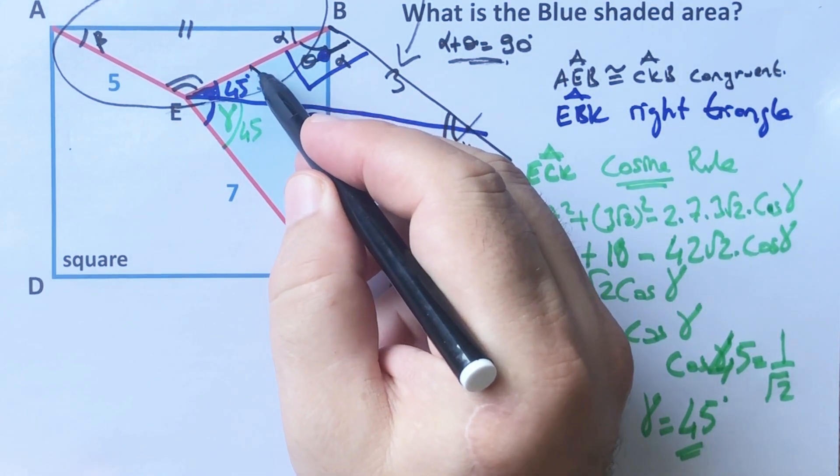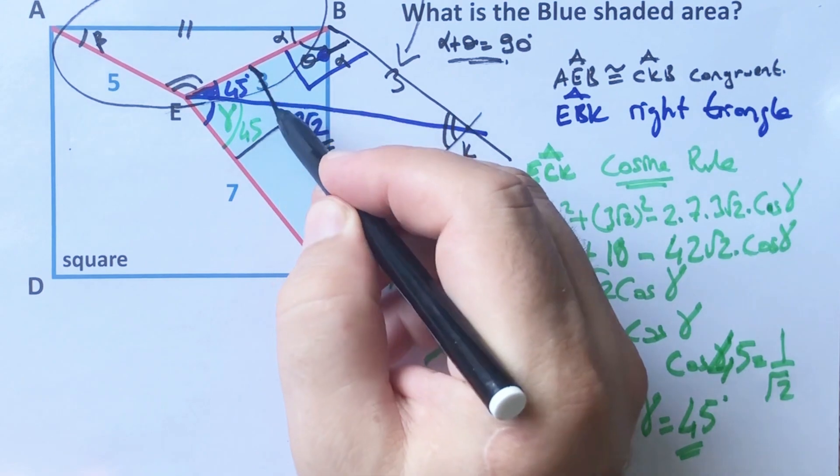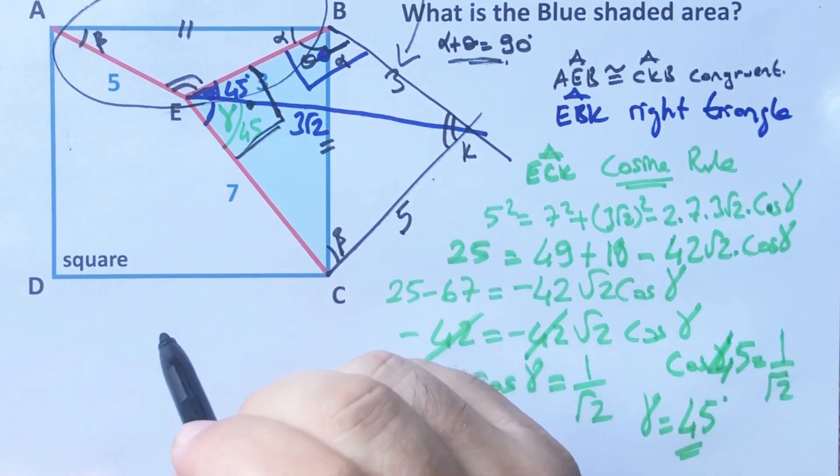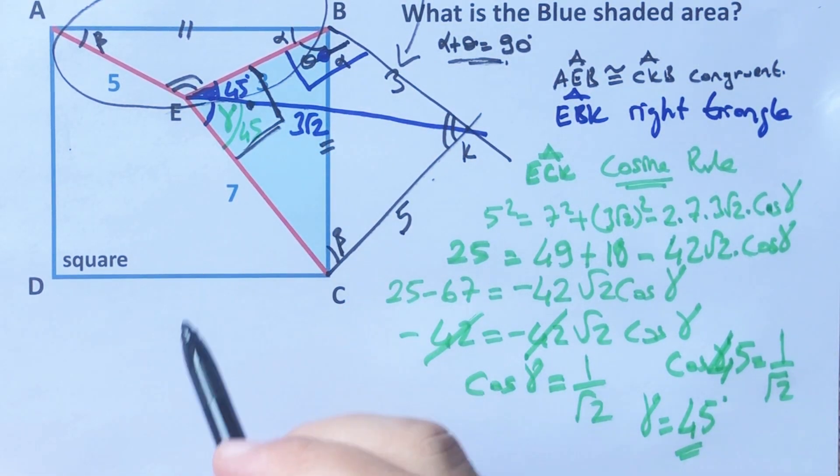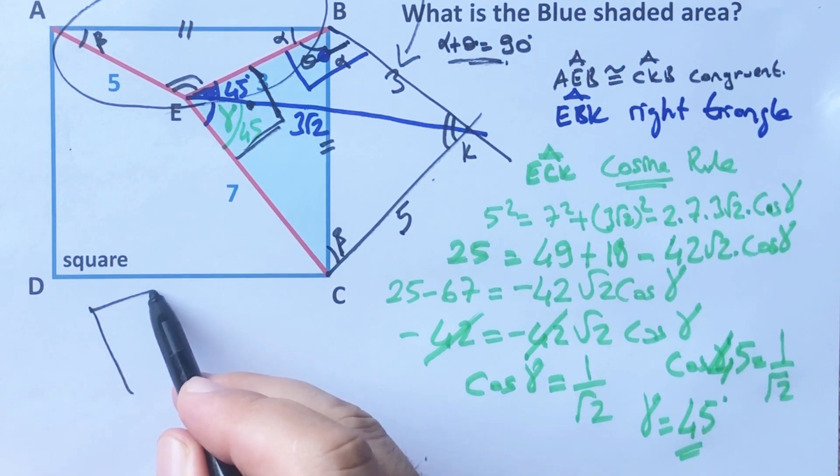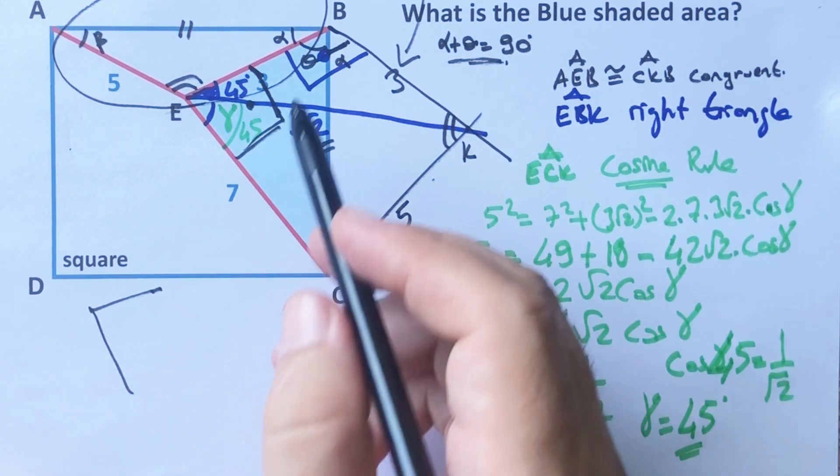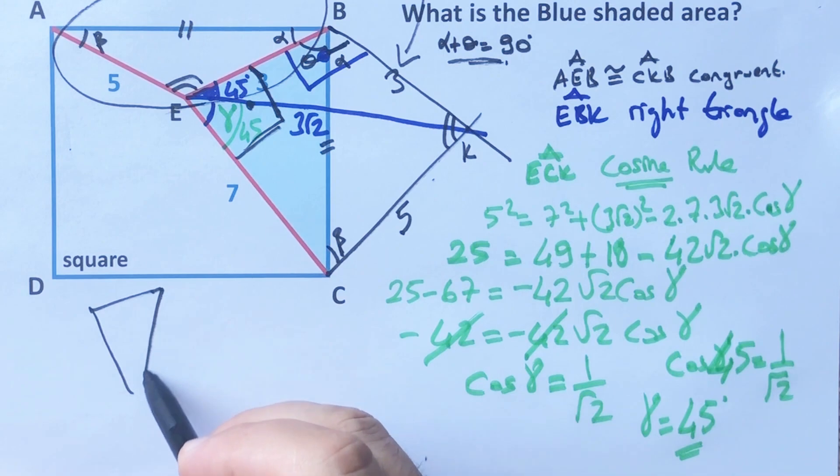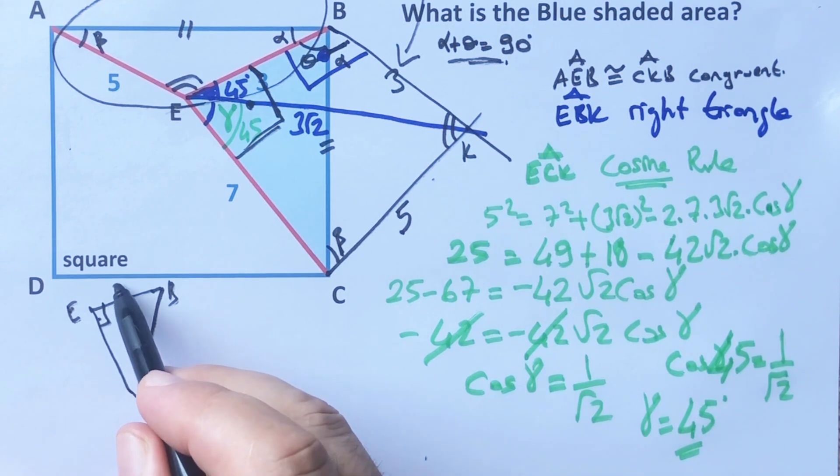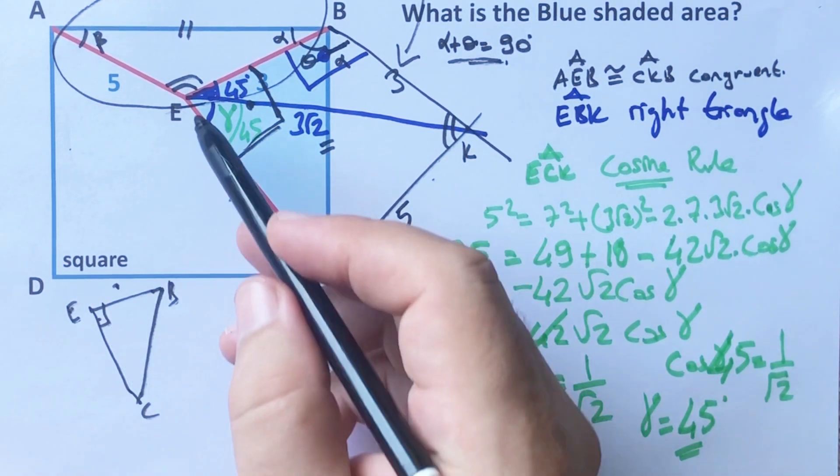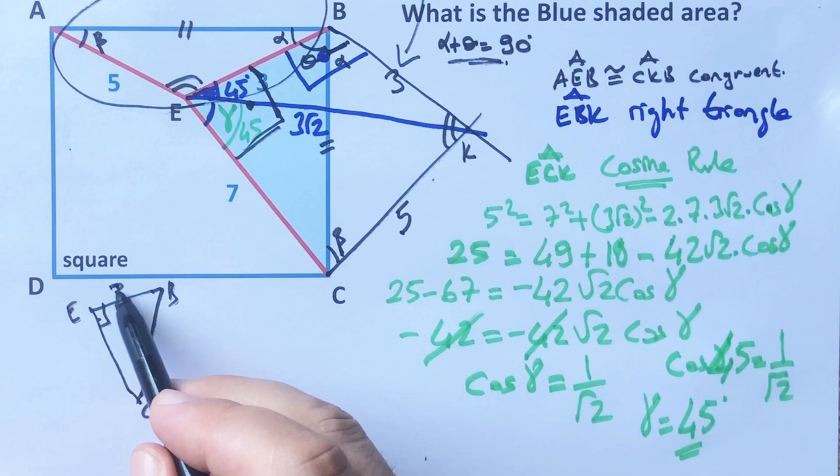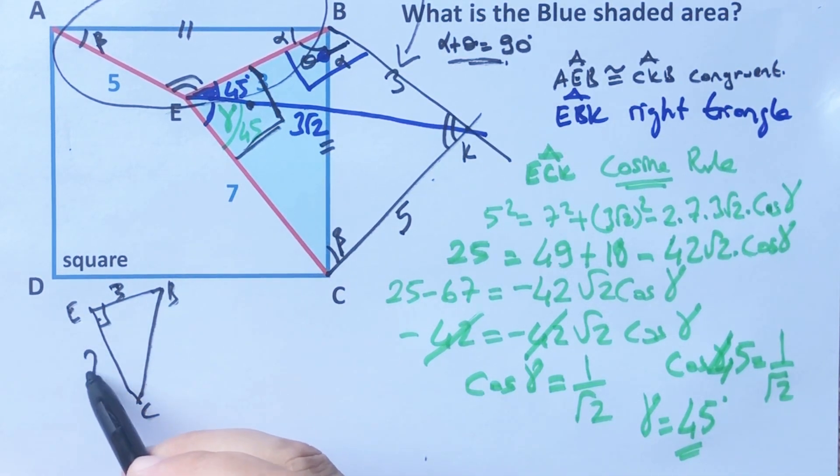Finally we get a right triangle. Let's draw here BEC triangle, and here is 90 degrees. This side is 3, right? This side is 7.